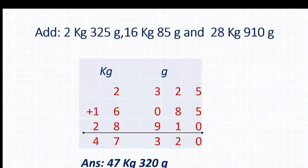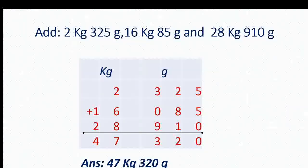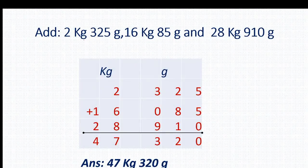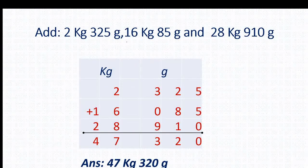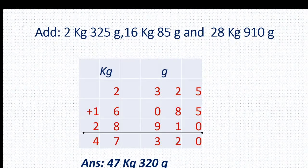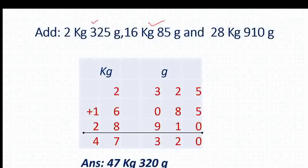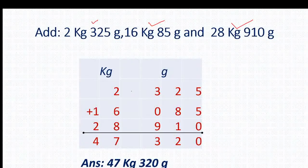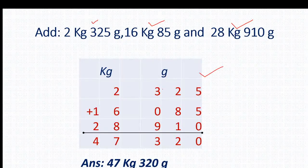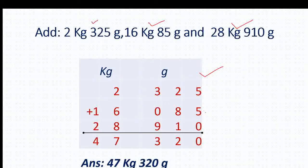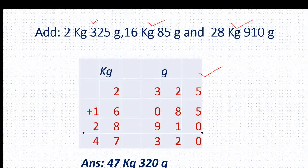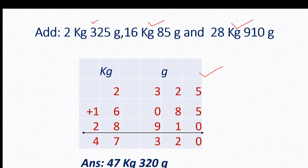Moving to the next page. Our question is add 2 kg 325 gram, 16 kg 85 gram and 28 kg 910 gram. Here we have 3 addends. Your first step is to write the units — I have written kg and gram. Second step is to arrange these numbers in the column. Next step we have to do addition.